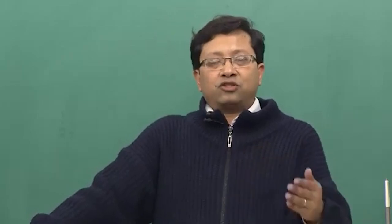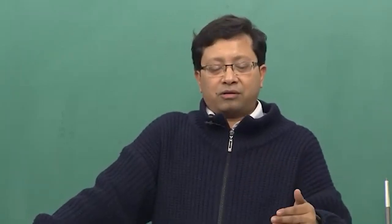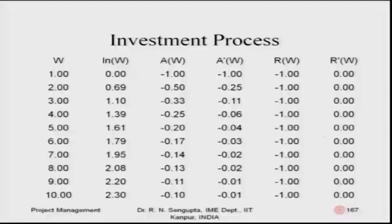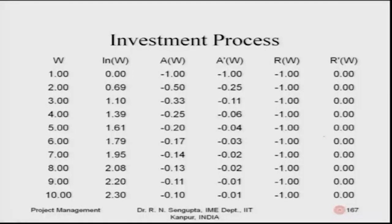In this example, I am again taking the values of w in the first column. These values are increasing by a quantum of one, two, three, four, and so on. The ln(w) utility function values are marked in the second column. So if I find out ln of one, ln of two, the values are there.